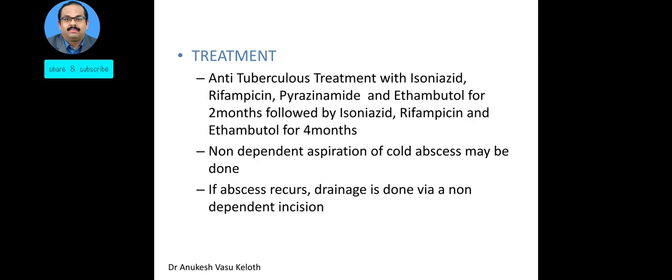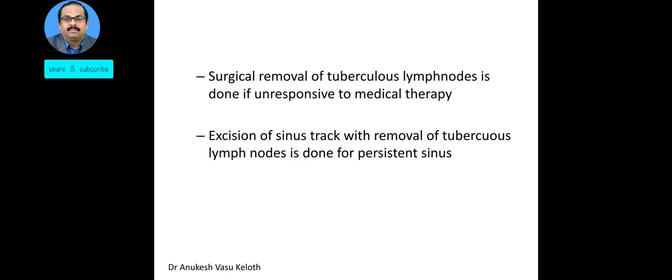For a cold abscess, non-dependent aspiration must be done, because aspirating at a dependent point risks creating a sinus tract. If the abscess recurs, drainage can be done via a non-dependent incision. In some cases, if the swelling persists even after medical therapy, surgical removal of the tuberculous lymph nodes may be attempted. In the case of a tuberculous sinus, the sinus tract and sinus opening must be excised, along with removal of the associated tuberculous lymph nodes.